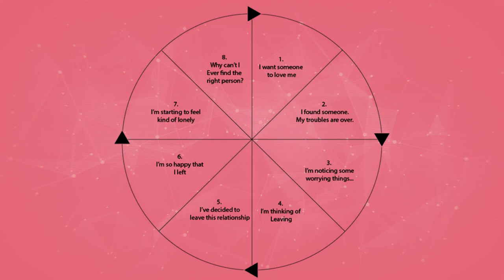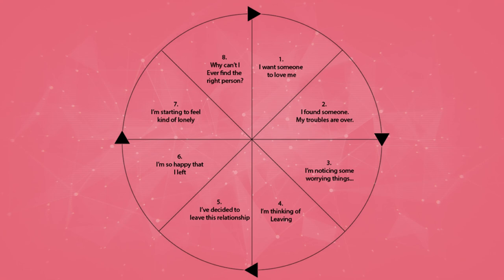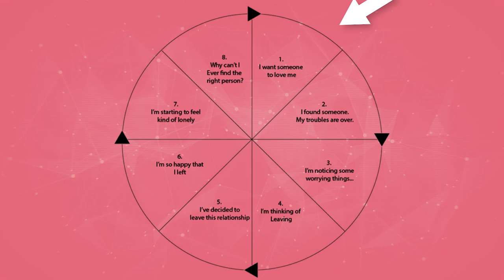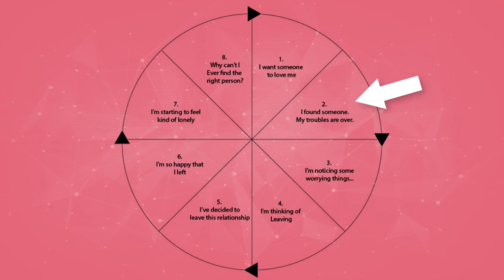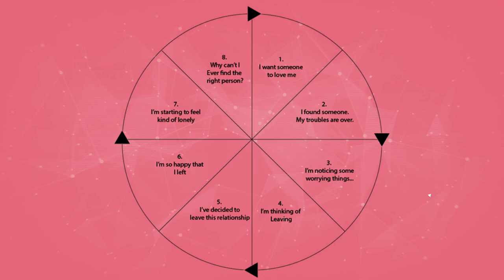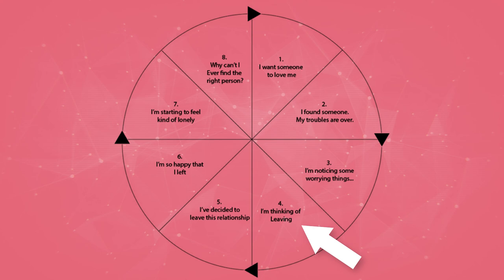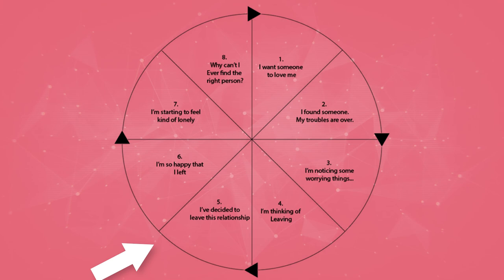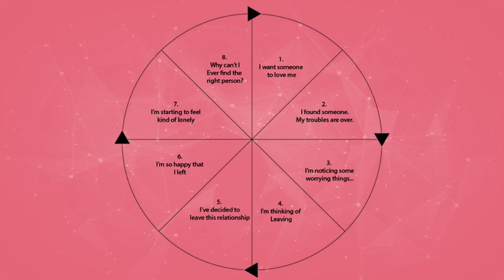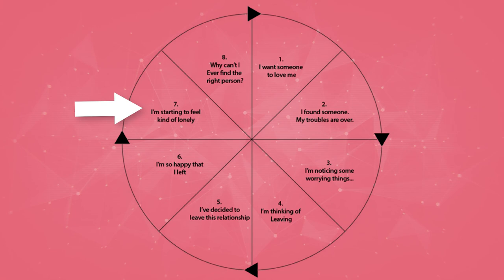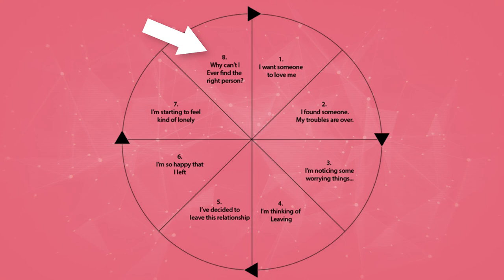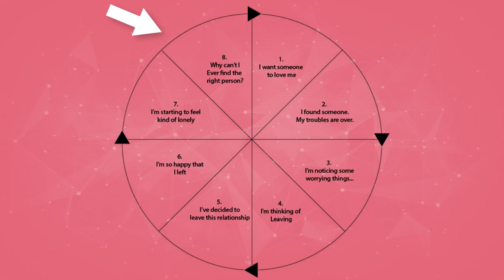The first stage starts with the avoidant thinking, 'I want someone to love me.' The second stage is when they've found a person giving them that love and they feel, 'This is great, my love troubles are over' — they've often found the anxious person. The third stage starts when the avoidant notices some anxious behaviors and the cracks begin to form. Stage four is the avoidant debating whether to leave. Stage five, they actually leave. Stage six, they feel super happy — they got their independence back. Stage seven, once enough time goes by alone, they start to feel lonely, thinking they can't ever find the right person. Stage eight: 'I want someone to love me' — and the cycle repeats.